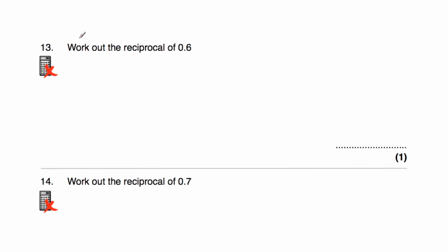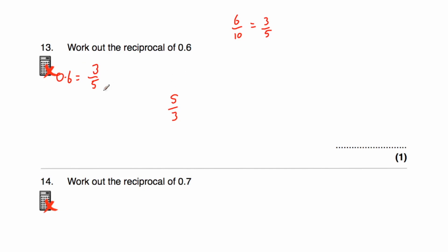Question 13: find the reciprocal of 0.6. It's a decimal, so convert it to a fraction. 0.6 is 6 tenths, which cancels down to 3 fifths. To find the reciprocal of 3 fifths, we flip it over to get 5 thirds. We can check: 3 fifths times 5 thirds equals 15 fifteenths, which is 1. So the answer is 5 thirds. As a mixed number that's 1 and 2 thirds, or as a decimal, 1.6 recurring.